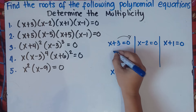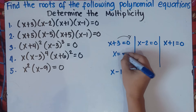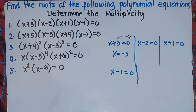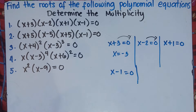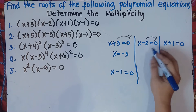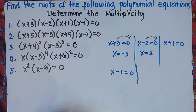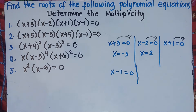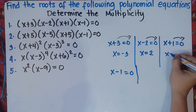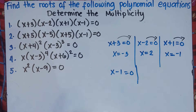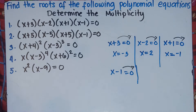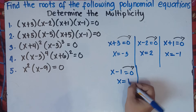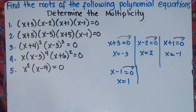This is positive 3, so it will become negative 3. For x minus 2, transfer negative 2 — this is negative — it will be positive 2. Same with 1: this is positive 1, it will become negative 1. And this is negative 1, transfer it, it will be positive 1. So those are the answers — very easy, right?